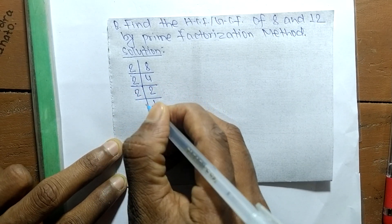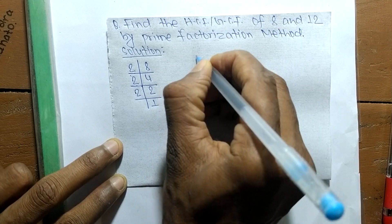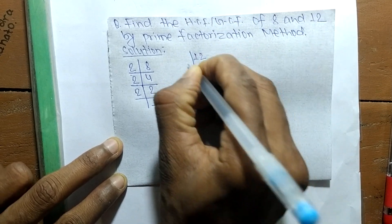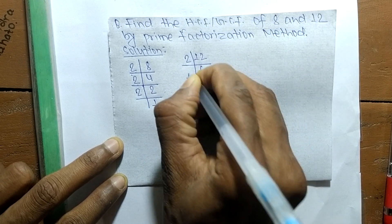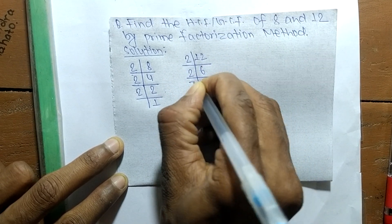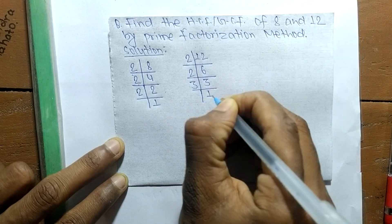In the same way, the prime factors of 12 are: 2 times 6 equals 12, then 2 times 3 equals 6, and 3 times 1 equals 3.